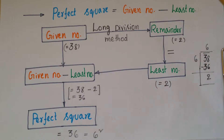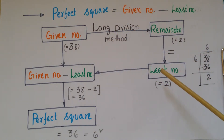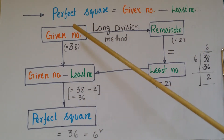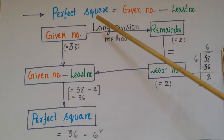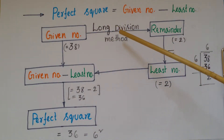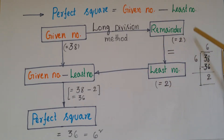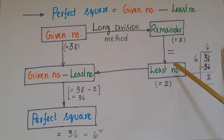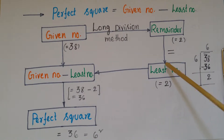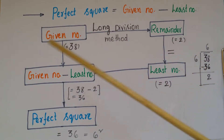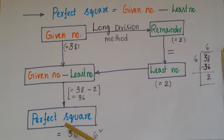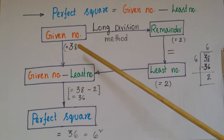I am going to explain through a flowchart how to find the least number to get a perfect square. First, they have given a number. By using the long division method, we can find the remainder. Once we get the remainder, we take that same value as the least number. We subtract this least number from the given number, and then we will get a perfect square.